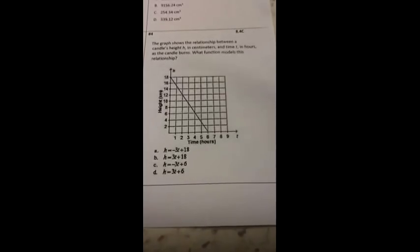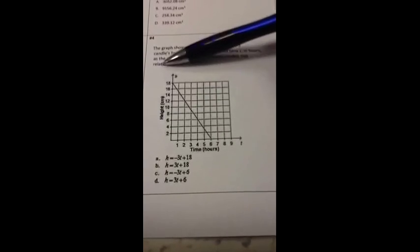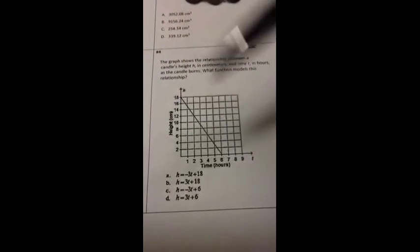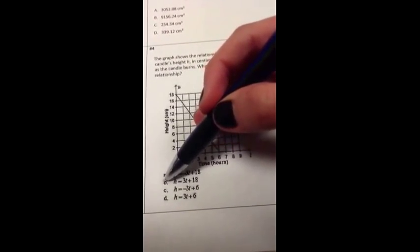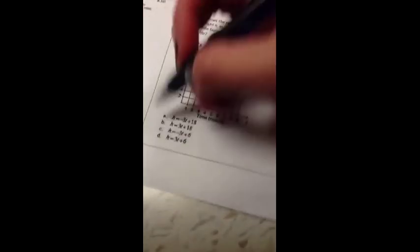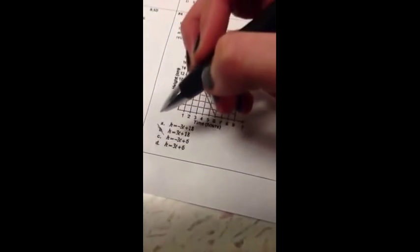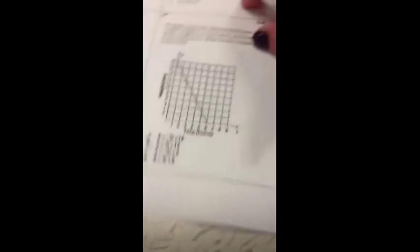On the graph you can see that it's going down, so it would be a negative number. So B and D would not be it.